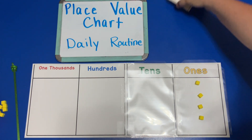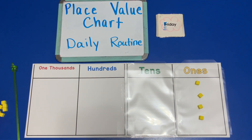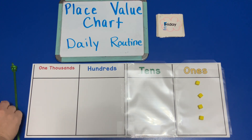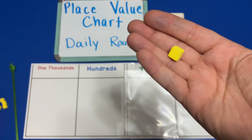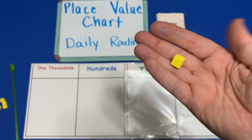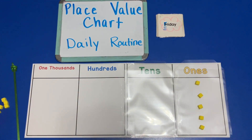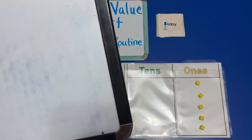And it would be Friday. On Friday we would add one unit to the place value chart, and then we're going to count how many do we have on our place value chart.